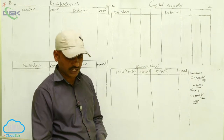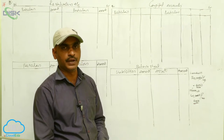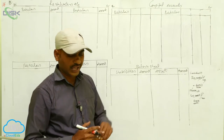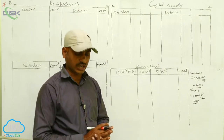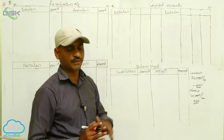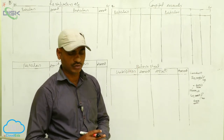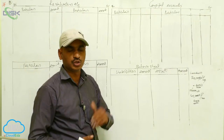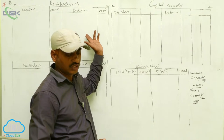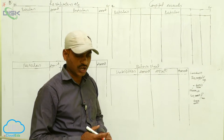Trade creditors: ₹1,000 need not be paid. Actual trade creditors are ₹25,000, but since ₹1,000 need not be paid, we pay only ₹24,000. This ₹1,000 is deducted from ₹25,000. When a liability is decreased, it is a gain for the business, so we write it on the credit side of the revaluation account.